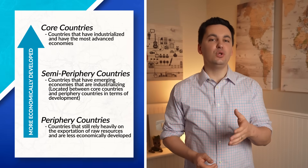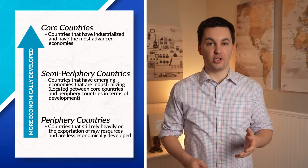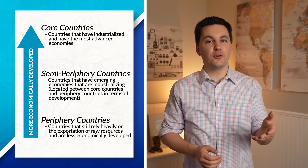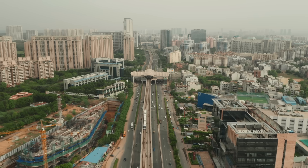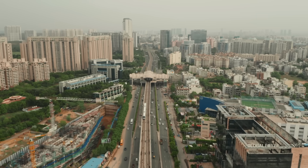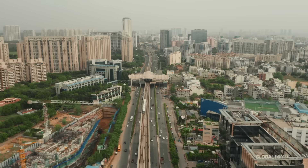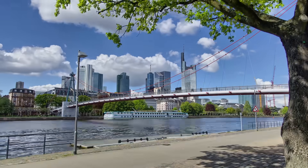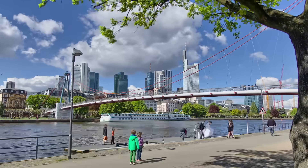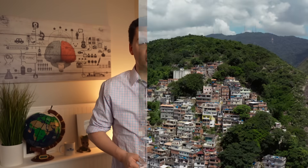These demographic changes are just a few of the factors causing future megacities and metacities to appear more in periphery and semi-periphery countries. As cities around the world experience population growth, they will continue to be tested in new ways. More people in the city increases the demand for fresh water, housing, food, and electricity. More people means more flushes and increased use of a city's sewer systems, roads, and public transportation services.